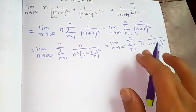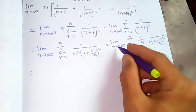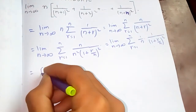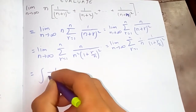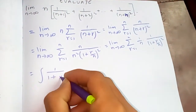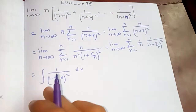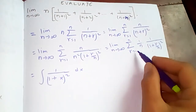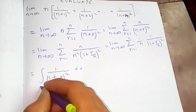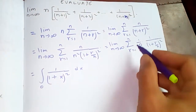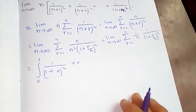Using the definite integral property and limit: as n tends to infinity, this summation will change to an integral. One over (one plus r/n) squared, where r/n tends to x and one over n tends to dx. What about the limits? When r tends to one, r over n tends to zero. When r tends to n, r over n tends to one.